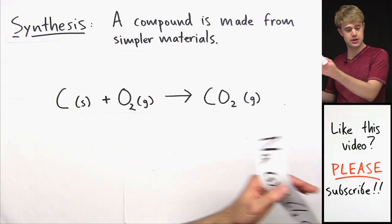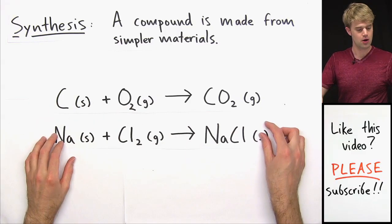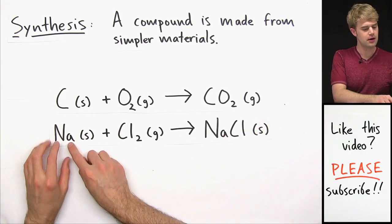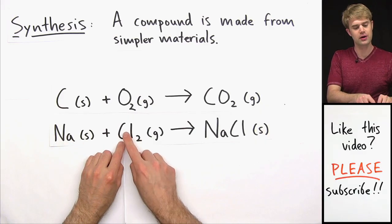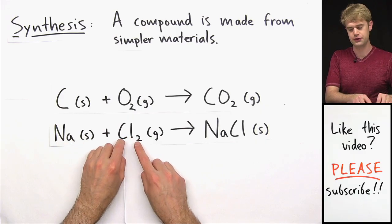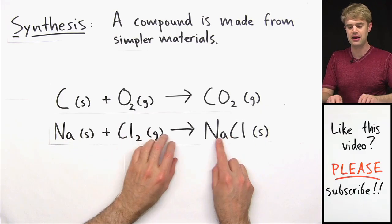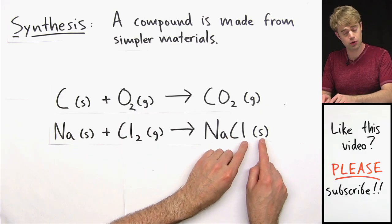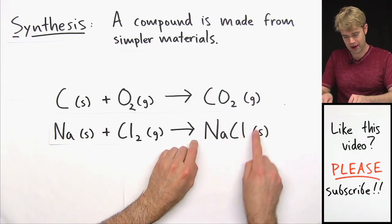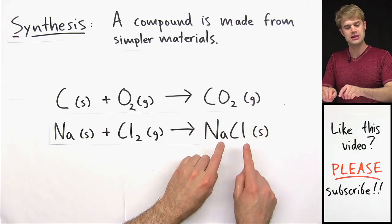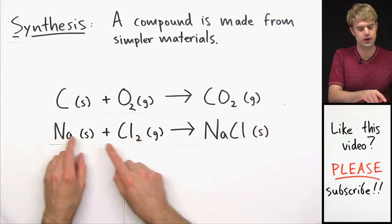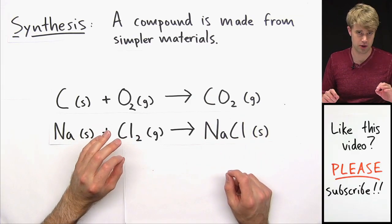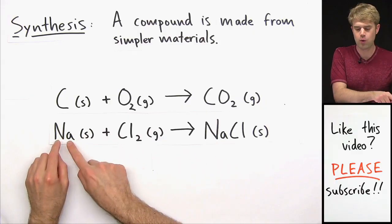Here's another example. We take sodium and chlorine gas, Cl2, and that makes sodium chloride, NaCl. What we end up with is more complex than the simple things we started with.